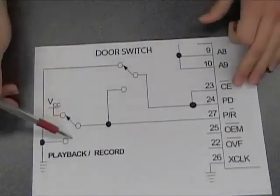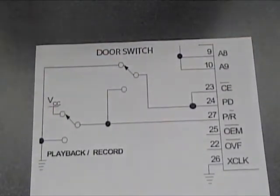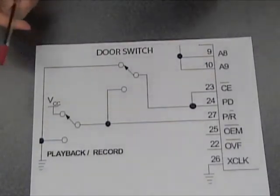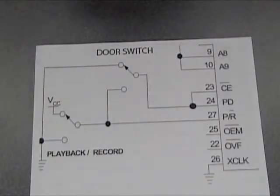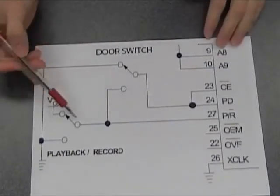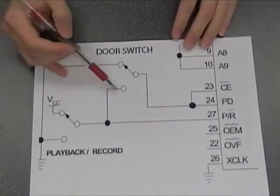So it all works through these two switches. I really thought about how to make the control as simple as possible. And this is what I came up with. The playback record switch controls both the playback record pin and one side of the door switch.